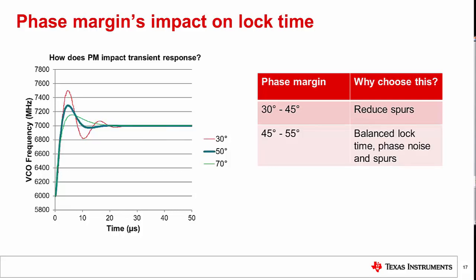As we increase the phase margin further to 50 degrees, the ringing decreases as well as the analog lock time. Note how the VCO frequency stabilizes to the target 7 GHz much faster than the previous simulation. A good general purpose choice of phase margin to balance lock time and spur occurs in the 45 to 55 degree range.